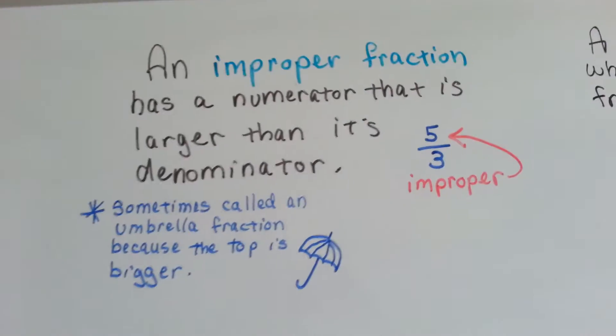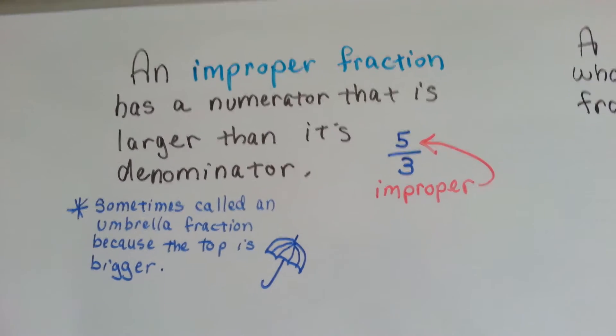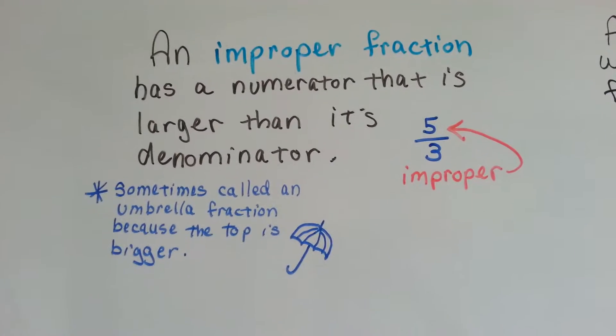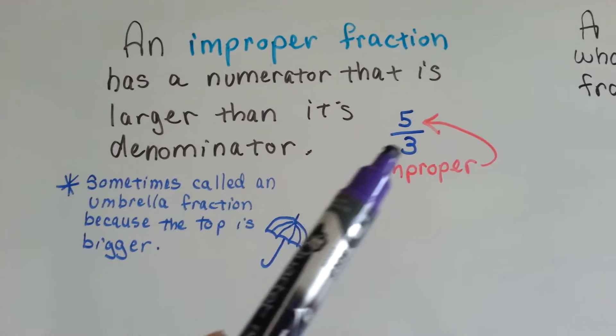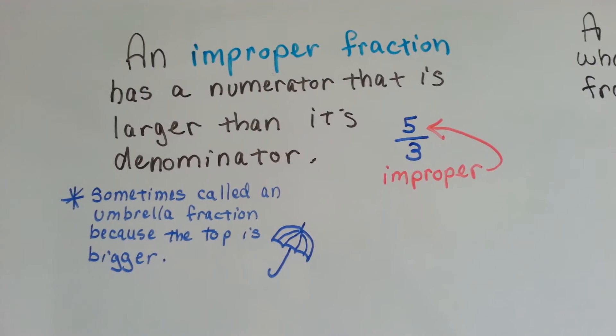I'm going to do a real quick review here. An improper fraction has a numerator that is larger than its denominator. Five-thirds is improper because the five is bigger than the three. The numerator is bigger than the denominator.